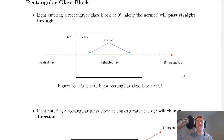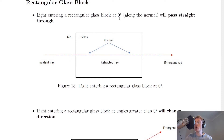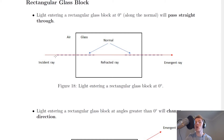The first one we'll look at is the rectangular glass block. You'll notice we've got a rectangular block here with light coming along the normal of our block. From doing the experiment, you should know that light entering a rectangular glass block at zero degrees, i.e. along the normal, will pass straight through. You'll see the light going along the normal there, and if I draw a normal at this end, you'll see the light going along there as well.